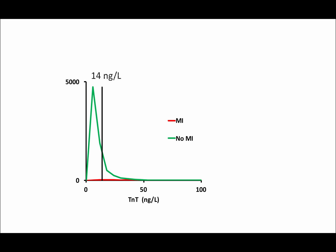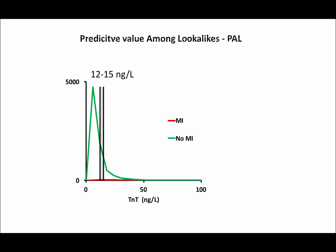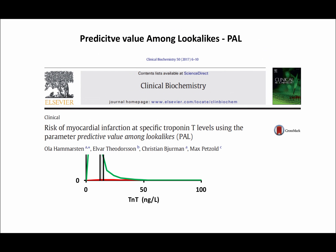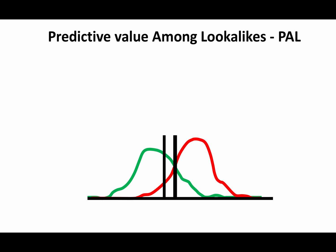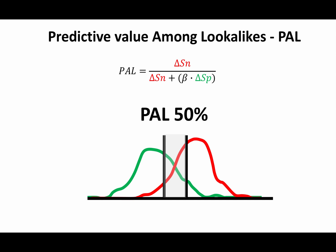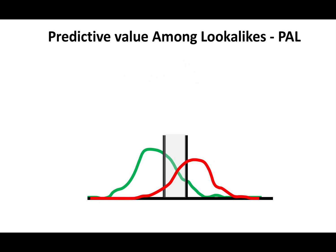In addition, in this situation you want to know the risk of myocardial infarction at a specific Troponin T-level, not above or below your patient's level. A way to do this is to construct a range covering 14 nanograms per liter — for instance 12 to 15 nanograms per liter — and calculate the proportion of patients with myocardial infarction within this range. This is called Predictive value Among Lookalikes, or PAL. The principle of PAL is to use the fraction of patients with or without myocardial infarction within a Troponin T range, using delta sensitivity and delta specificity within this range. To adjust for myocardial infarction prevalence, calculations are adjusted using odds for not having myocardial infarction — the beta factor.